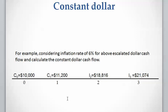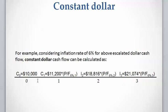Now we want to remove the effect of inflation and calculate the constant dollar cash flow. Please note that the constant dollar cash flow can only be calculated after you have already calculated the escalated dollar cash flow. In order to calculate the constant dollar cash flow, we discount each year's cash flow by the inflation rate. The present time payment is not affected by any inflation or escalation.